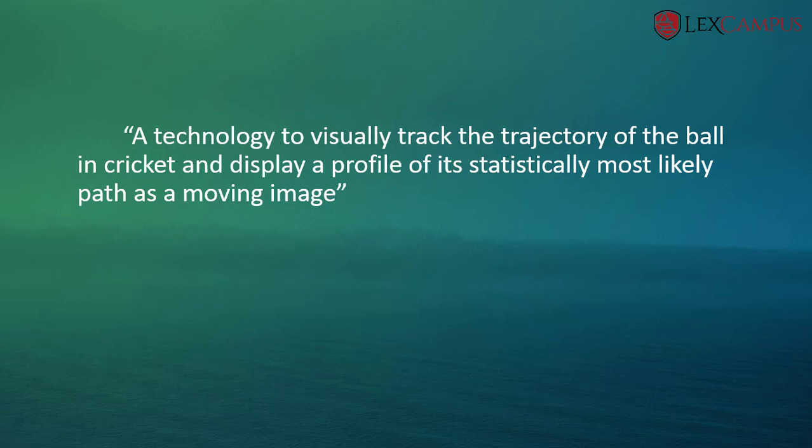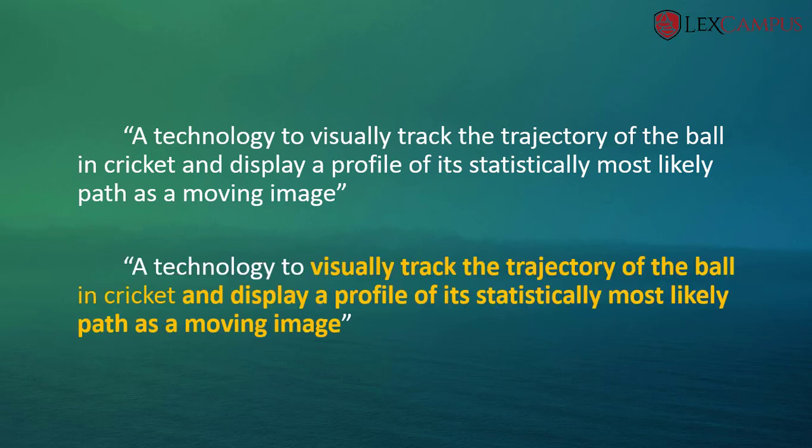Let us assume that we are not completely aware of this technology and go through the process step by step — first by identifying the key features and then extracting the keywords from the disclosure. The key features are highlighted here: visually tracking the trajectory of the ball in cricket, and displaying a profile of its statistically most likely path as a moving image.